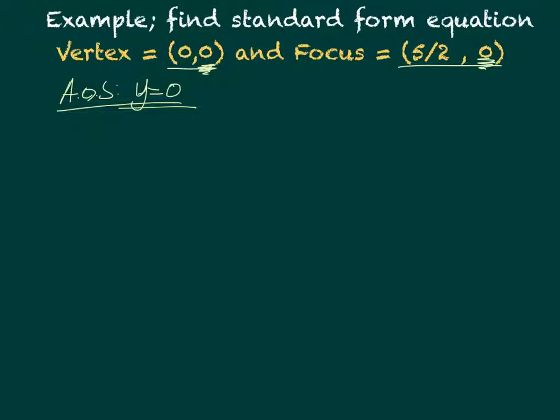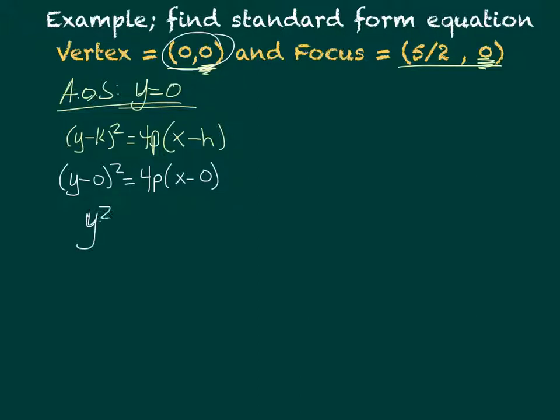So that means we have the standard form equation (y-k)² = 4p(x-h). I already know my vertex is (0,0), so I can put that in: (y-0)² = 4p(x-0). Because it's zero, we don't have to write it. So y² equals 4p times x.